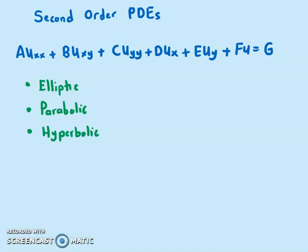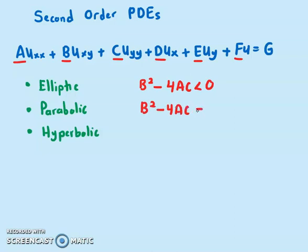If you are given a second order PDE, you can determine its type by looking at the coefficients. The equation is elliptic if B²−4AC < 0, parabolic if B²−4AC = 0, and hyperbolic if B²−4AC > 0.